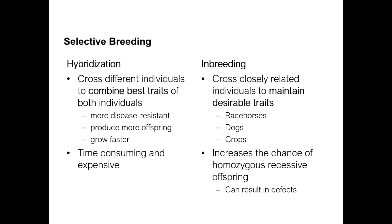With inbreeding you're maintaining the traits; with hybridization you're crossing organisms to combine the best traits, so that maybe someday you could inbreed those to maintain them. Each type of selective breeding has its own problems. Hybridization is time-consuming and expensive to finally get your population to true breed — it takes many generations to get to that point.